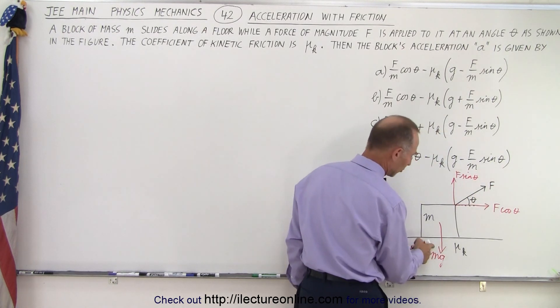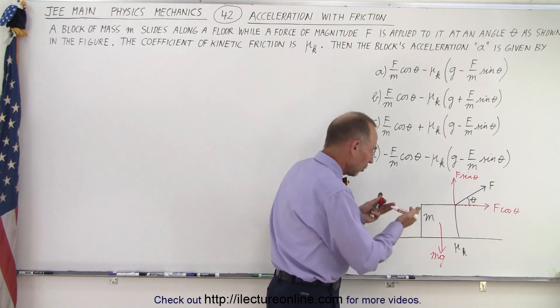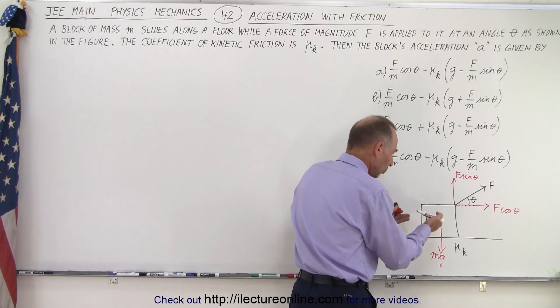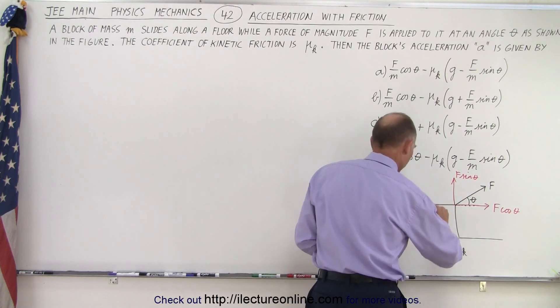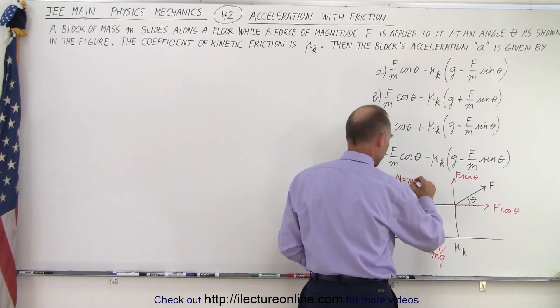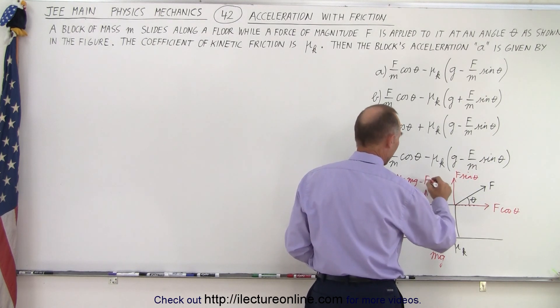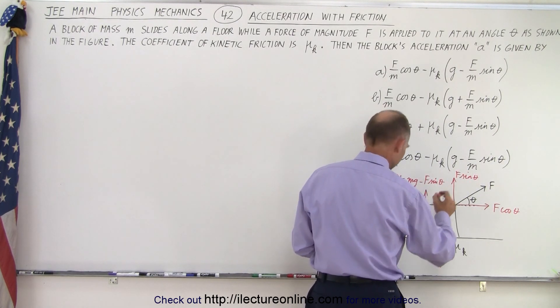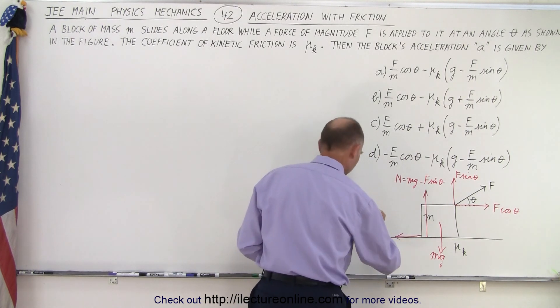Notice that it works in the opposite direction as mg, which essentially makes the object weigh less relative to the floor. And so the opposing force, the normal force, will be equal to mg minus the vertical component of the force F sin θ. And then we have the friction force acting in the opposite direction.